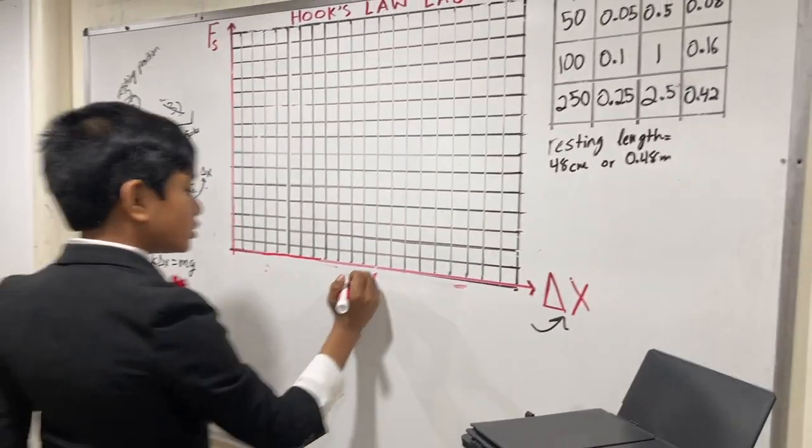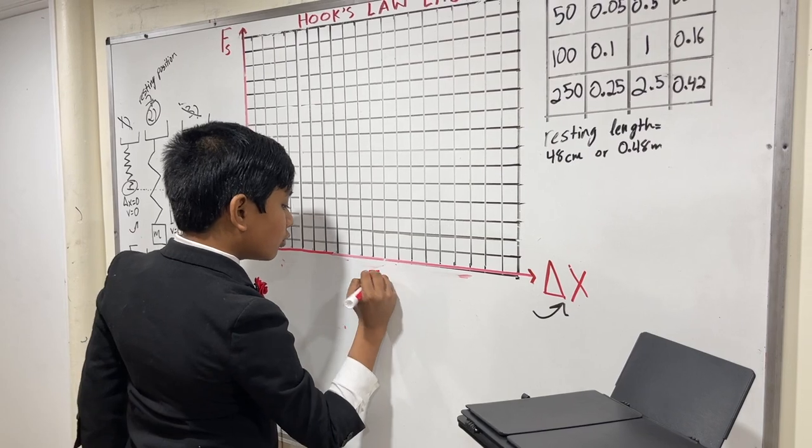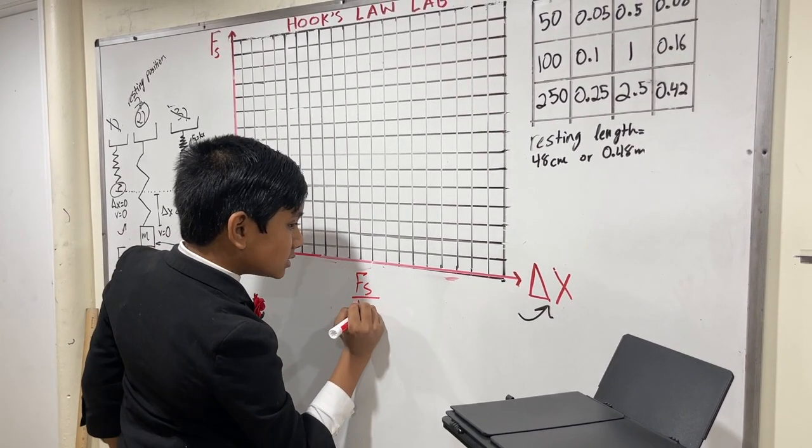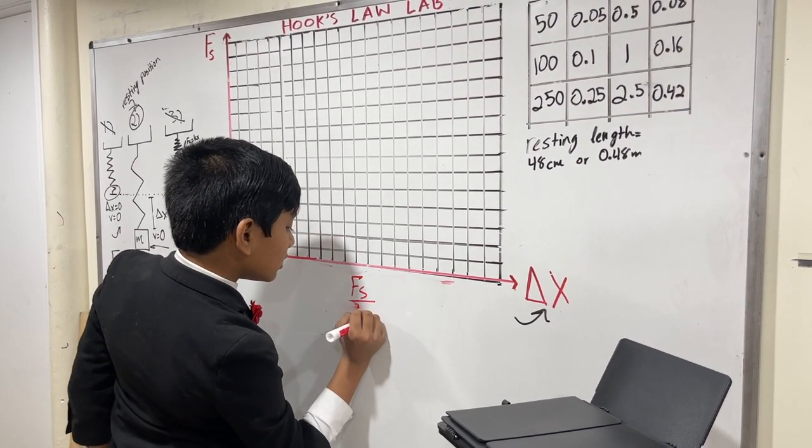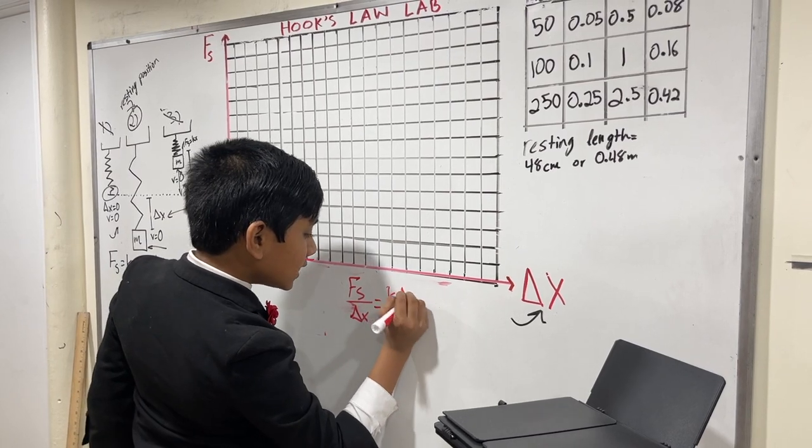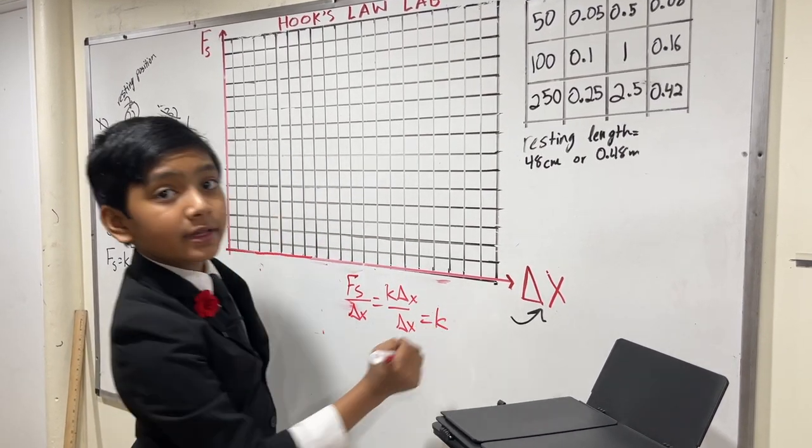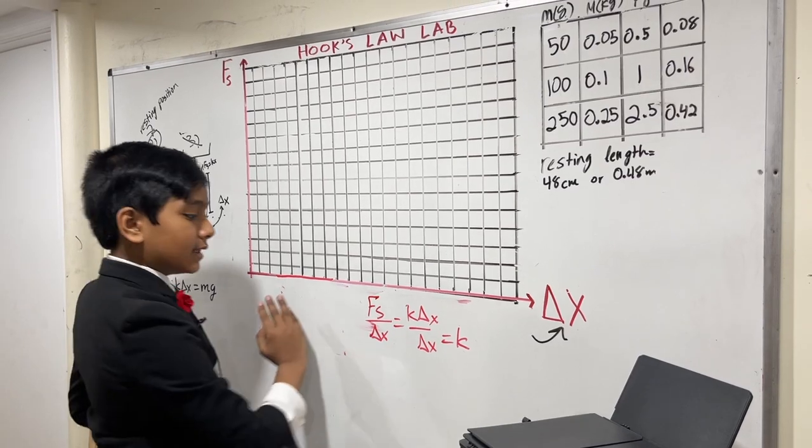That's because when we measure the slope of this graph, we will do y fs over x, delta x. And since fs is k delta x, that means the slope will give us our spring constant, k.